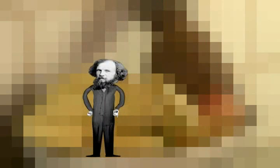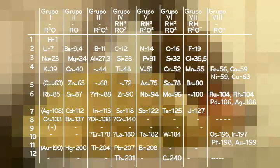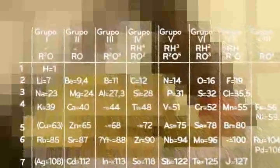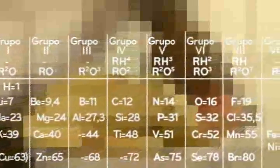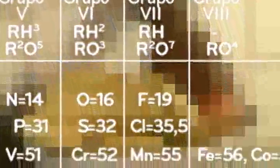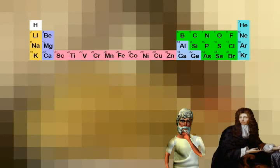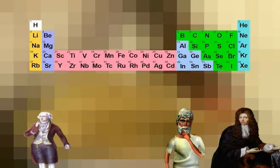Foi Mendeleev quem propôs uma organização dos elementos que iria se transformar na grande referência para o futuro. Foi a primeira tabela periódica, composta de 64 elementos. Mendeleev classificou-os em grupos e os organizou pela periodicidade de seus pesos atômicos. Mendeleev conseguiu, inclusive, prever a existência de elementos que estavam faltando em sua tabela e que depois foram realmente descobertos. Hoje temos 94 elementos naturais organizados e conhecidos em suas particularidades.